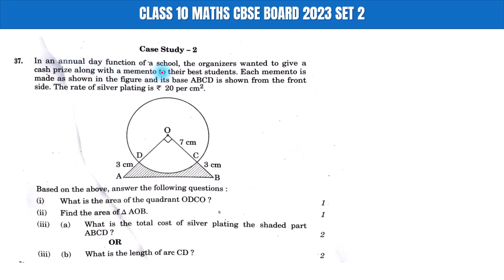In an annual day function of a school, the organizers wanted to give a cash prize along with a memento to their best students. Each memento is made as shown in the figure and its base ABCD is shown from the front side. The rate of silver printing is 20 rupees per centimeter square. First question A: What is the area of the quadrant?